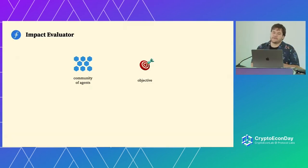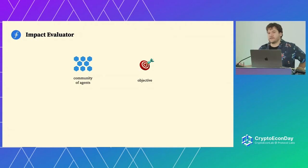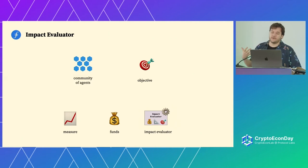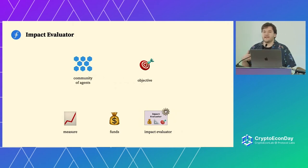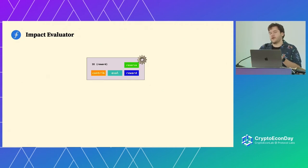That third example is just a throwaway example that is meant to be very modular and could be used for a lot of components. A lot of what other people have talked about in terms of Saturn can plug into it. I just want to describe it in terms of building an IE. So what are impact evaluators? These are mechanisms we've articulated as objects in the economy or environment that can organize a community of agents to achieve a shared objective.